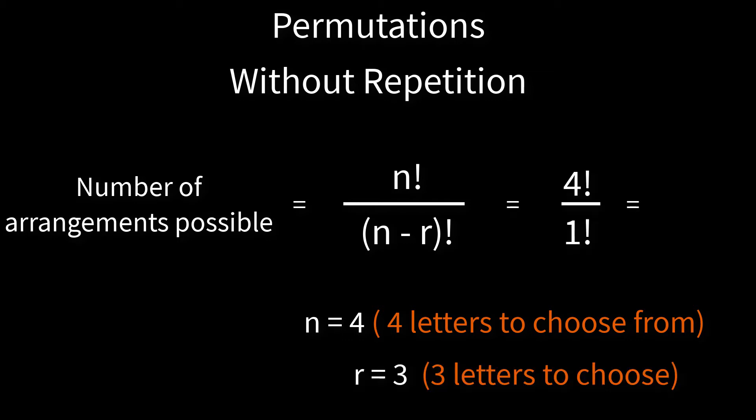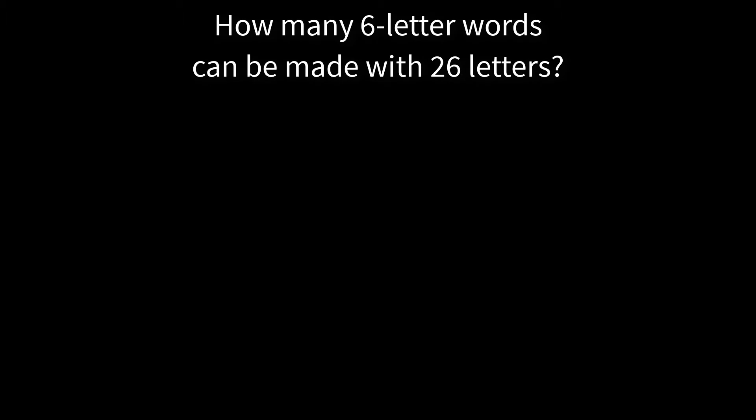We can easily confirm the formula gives an answer of 24 when we calculate how many three-letter words can be made with four letters. The more challenging example of six-letter words with all 26 letters to choose from gives us over 165 million possible arrangements. It's just as well we didn't try to figure out the answer by writing down all the possibilities this time.